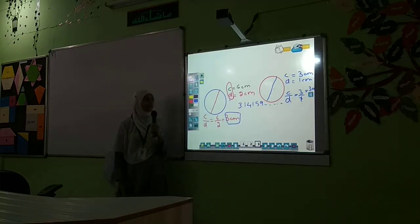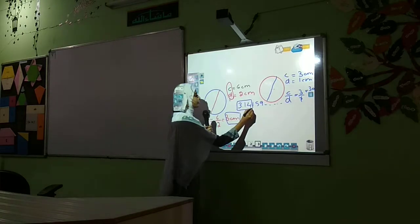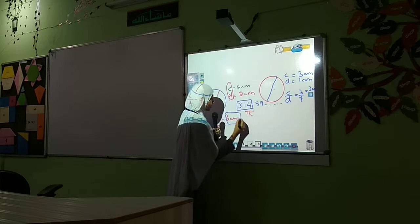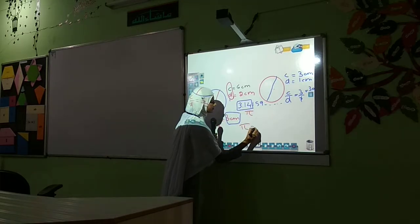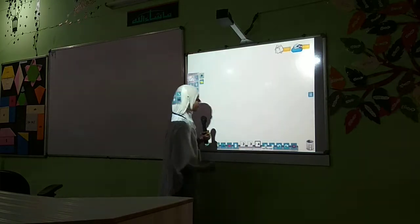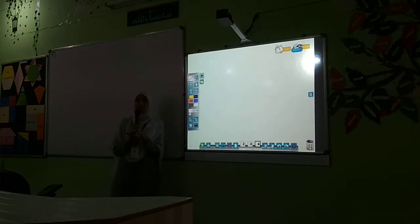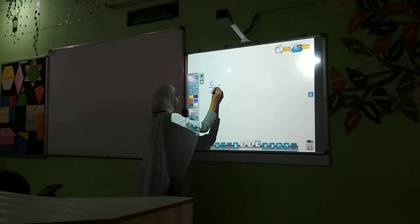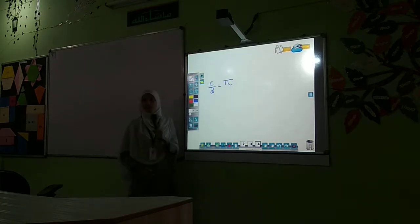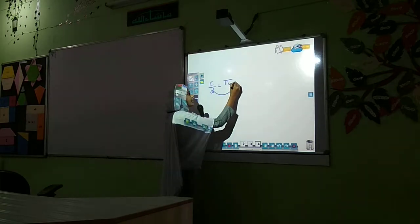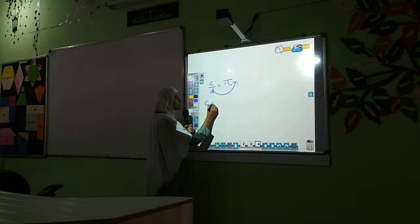After many discoveries, mathematicians told us that this ratio is not exactly 3, but it is nearly 3.14159... and so on. They agreed to take only 3.14 and denote it as π. So π is equal to 3.14. Next, we have to derive the formula to find the circumference of a circle. Here, C divided by d is equal to π.